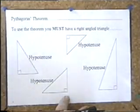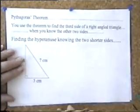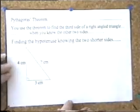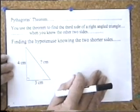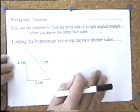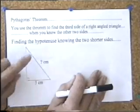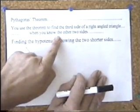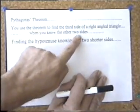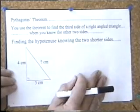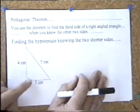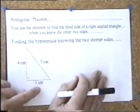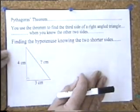When do you use Pythagoras' Theorem? You use Pythagoras' Theorem to find the third side of a right-angled triangle when you know the other two sides. So to use Pythagoras' Theorem, you're finding the third side of a triangle when you know the other two sides. Let's look at this case.